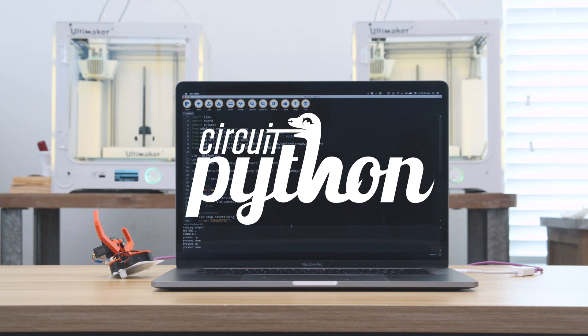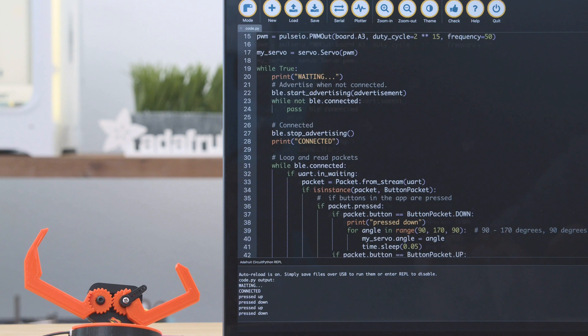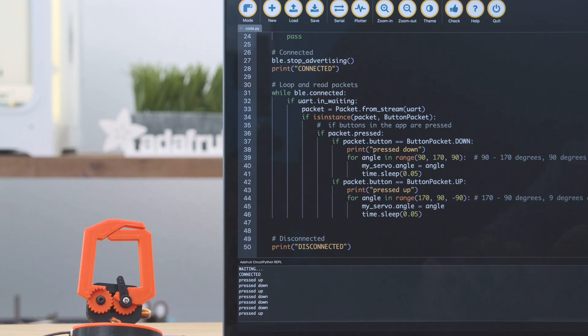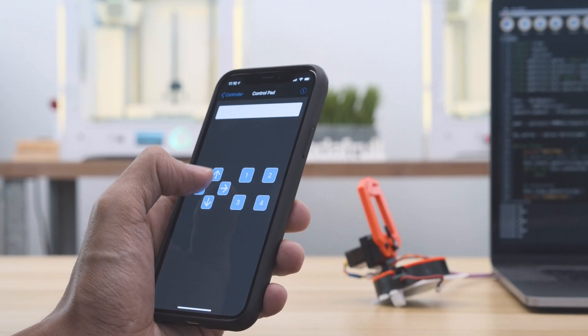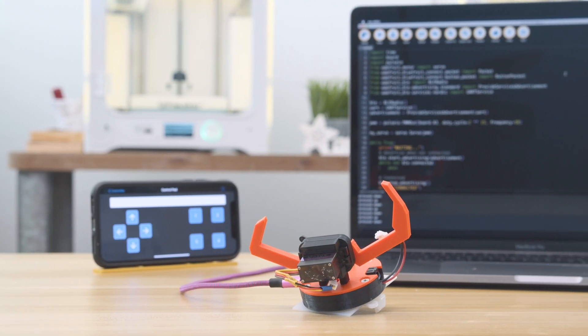The BLE libraries for CircuitPython make it easy to control servos using the Bluefruit Connect app. In the code, the up and down buttons are set to trigger the servo when they're pressed. The angle of the servo is tuned for the gripper so it doesn't stress out the motor. In the Bluefruit app you can press the up and down buttons to open and close the gripper. This is a quick and easy way to make a BLE controlled servo project.